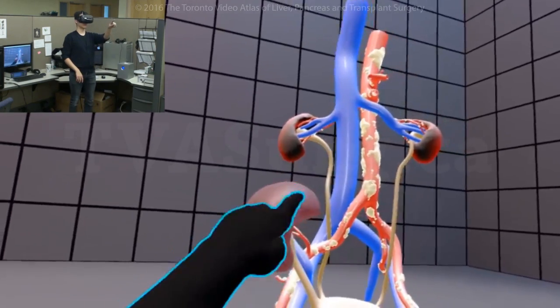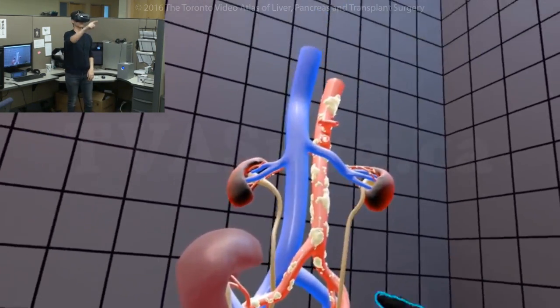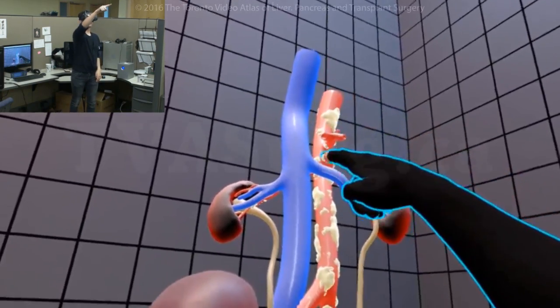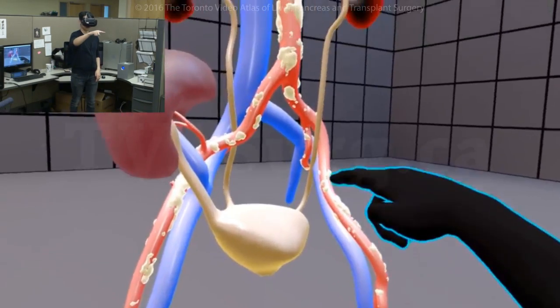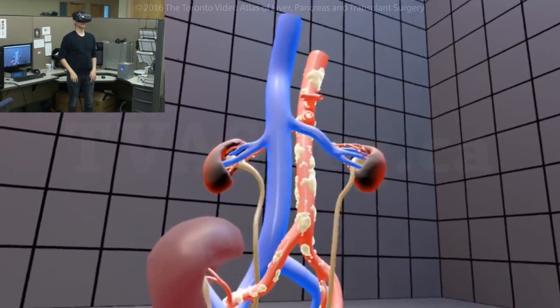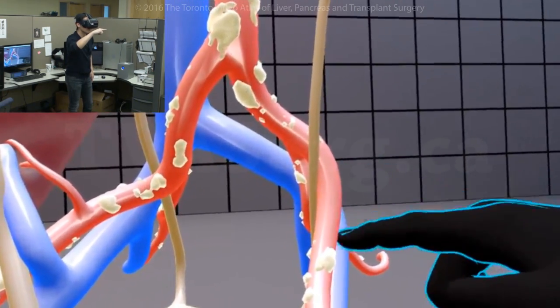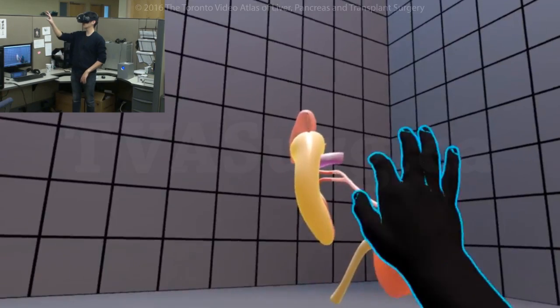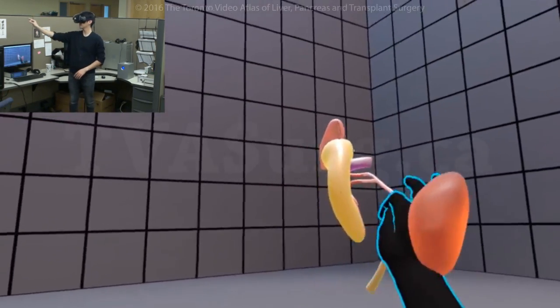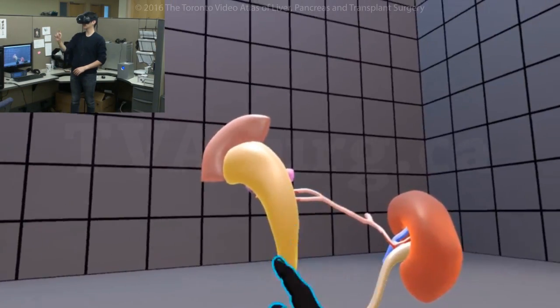You'll notice along the aorta, there's a lot of plaque-like substance. This is due to atherosclerosis. But notice on the iliac artery here, there's a smooth patch that's free of plaque. What the patient needed was a transplant. And in this case, it was a kidney transplant along with a pancreas transplant.